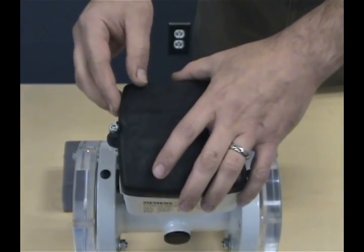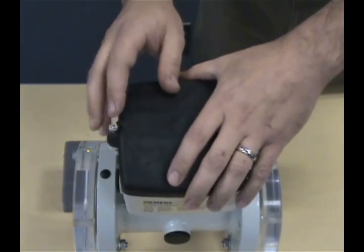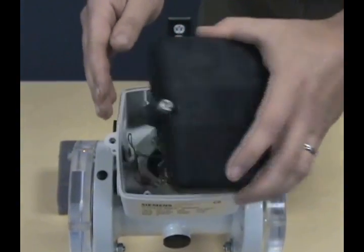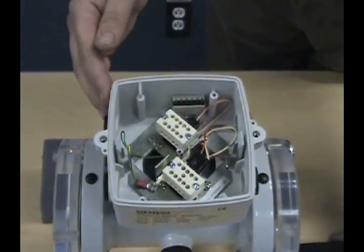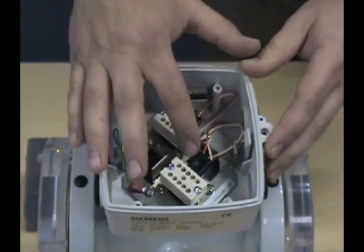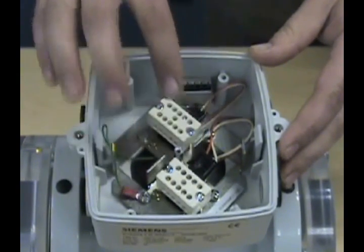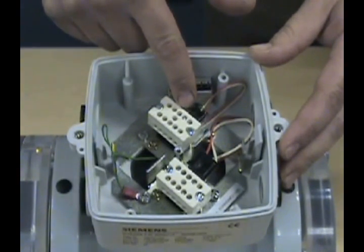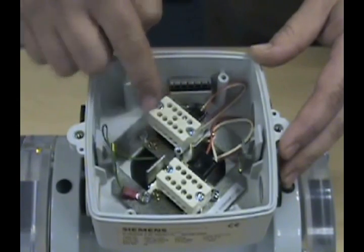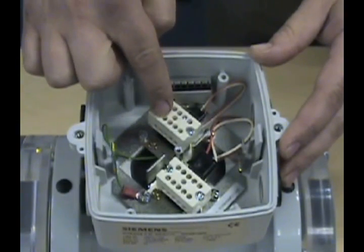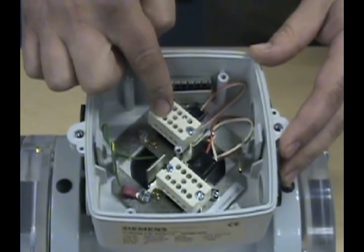The components of the flow sensor are contained under the black cover of the junction box. Inside we'll see two black plugs: the larger one for the electrode circuit, the smaller one for the coil circuit. They are contained in two white holding blocks which are simply terminal points.